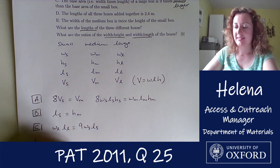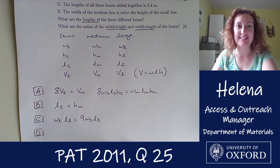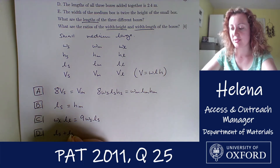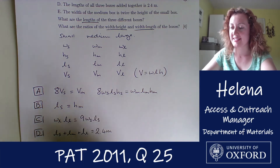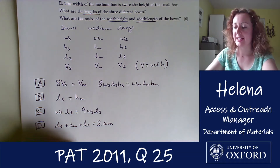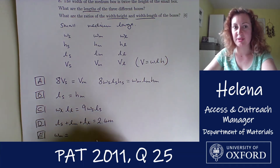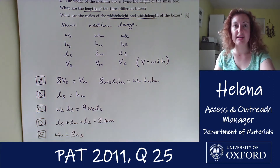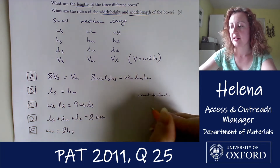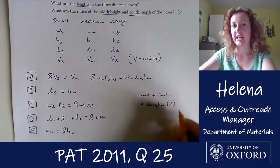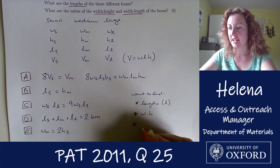Statement D tells us the lengths of all three boxes added together equals 2.4 meters: ls plus lm plus ll equals 2.4 m. Statement E says the width of the medium box is twice the height of the small box: wm equals 2hs. We want to find the lengths ls, lm, ll, the width-to-length ratio x, and the width-to-height ratio, which I'll define as z, where w equals z times h.